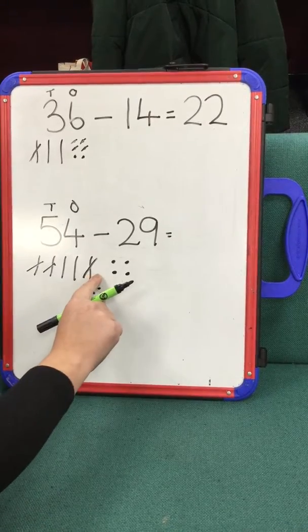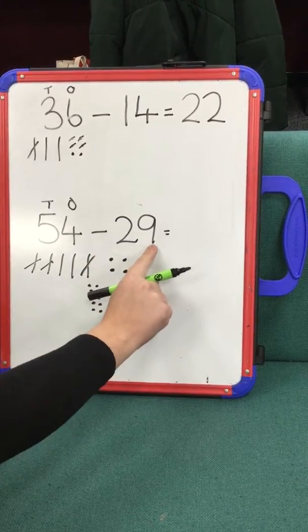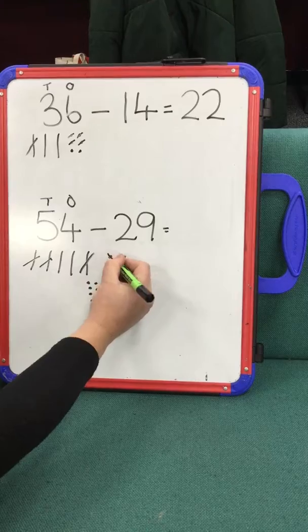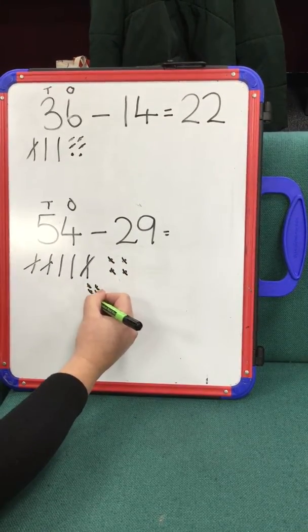Okay, so I've exchanged that 10 for 10 ones. Now, if you look, I've got enough ones to take 9 away. So cross them out. 4, 5, 6, 7, 8, 9.